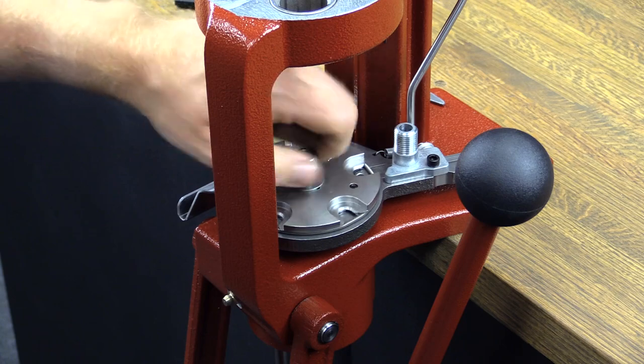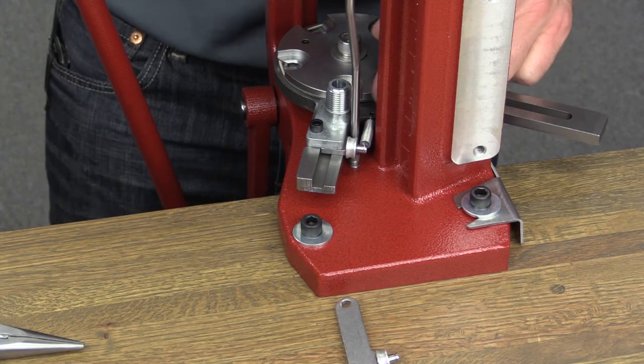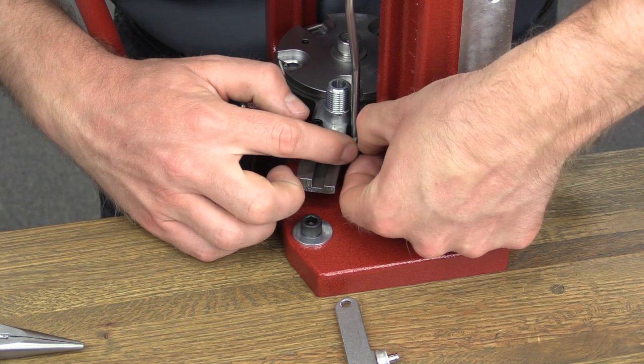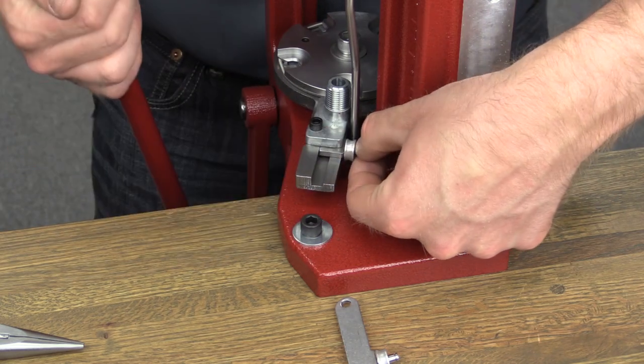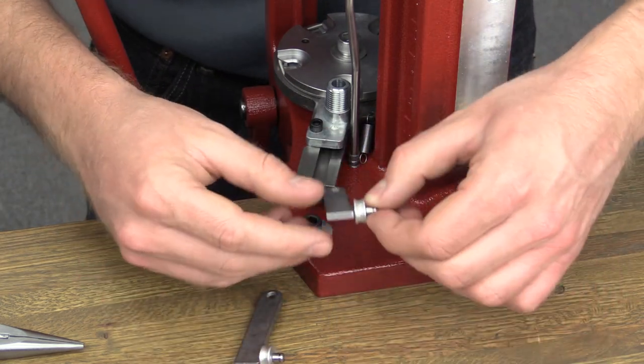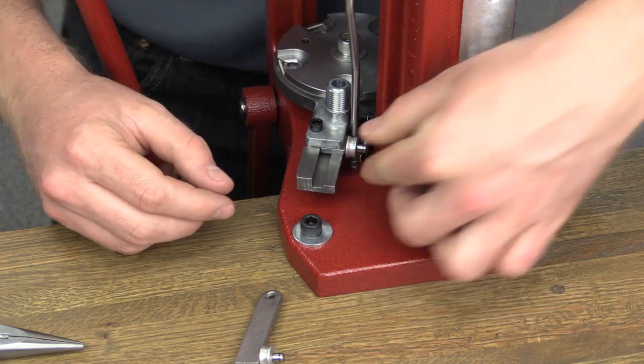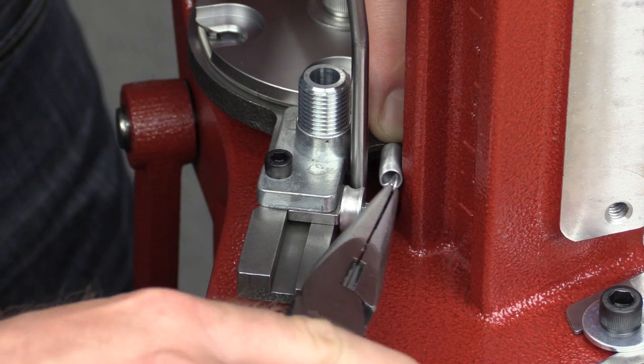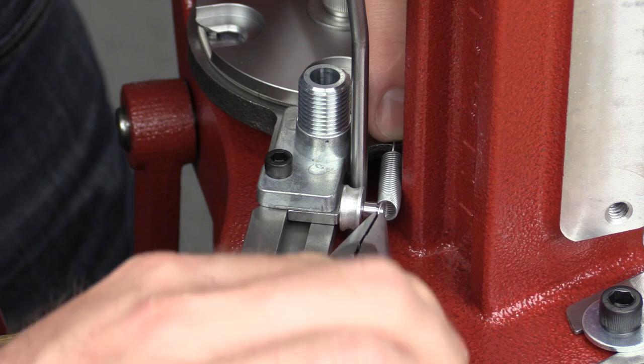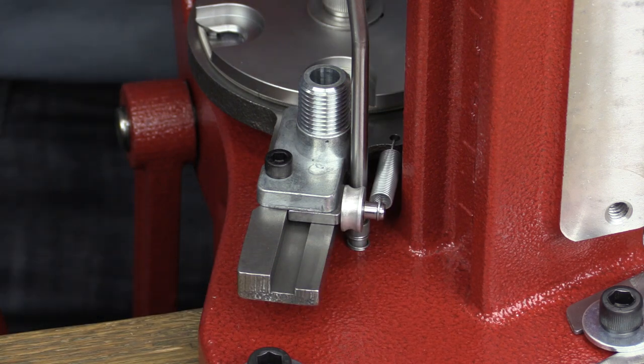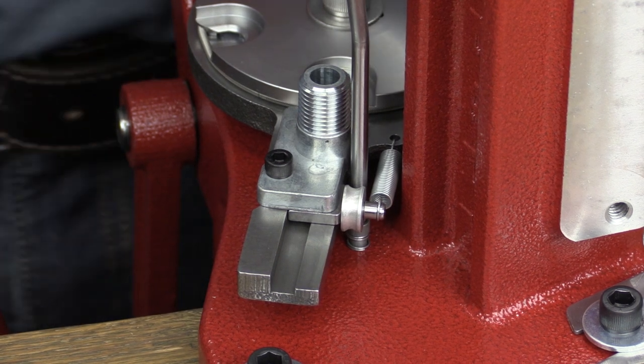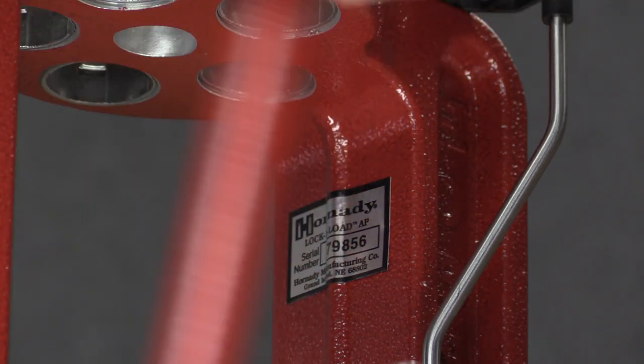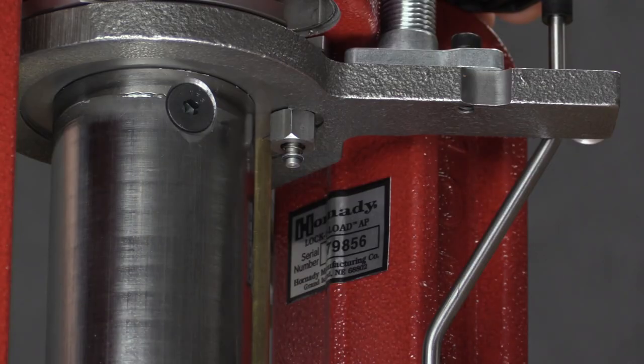Determine which primer slide is required for your application. If changeover is needed, unhook the spring attached to the primer slide and remove the slide from the subplate. Place the correct primer slide flat side up into the groove on the subplate and slide it forward. With one end of the spring attached to the subplate, attach the other end of the spring to the pin on the primer slide. The primer seater punches are installed from the bottom of the subplate.